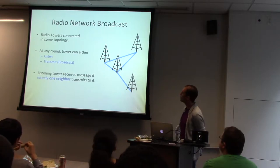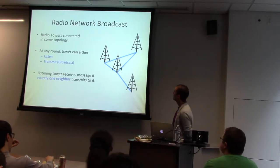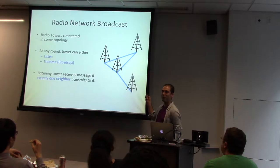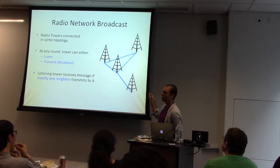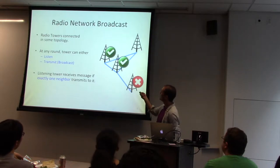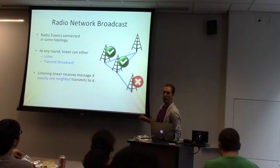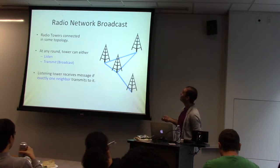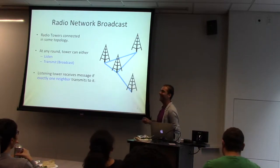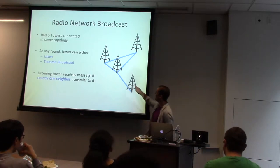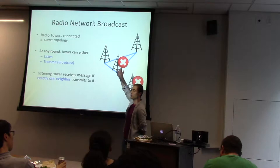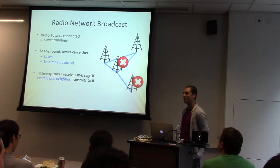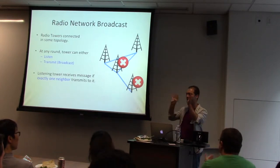A listening tower receives a message if exactly one neighbor transmits it. Imagine this guy has some animation showing that it's transmitting. In this case, only this guy's transmitting — so these guys get a message because exactly one guy's transmitting to them, and this guy gets nothing because no one's transmitting to it. If these two guys are transmitting, this guy hears nothing because two guys are transmitting to it, not exactly one. Just imagine two people talking to you at the same time — it'll probably not be synchronized and you can't make sense of it.